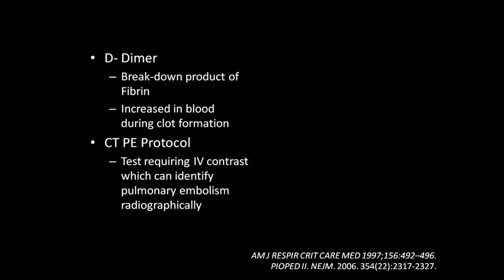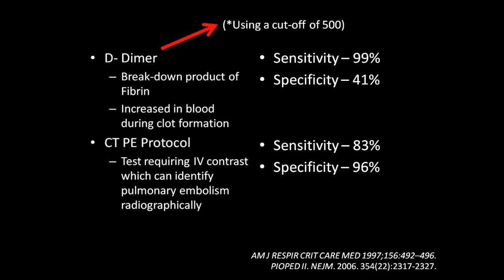Each of these tests, like any test, has a sensitivity and a specificity. We see the D-dimer is very, very sensitive but not very specific, so it might be a good test to rule out a pulmonary embolism. The CTPE protocol is much more specific than it is sensitive, so that might be a good test to rule in a pulmonary embolism. Just using this information, though, it's hard to tell if either test is good enough, if we need to order both, or if we just need one of them.